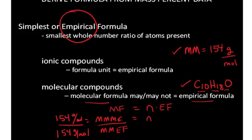So 154 divided by 154 equals 1. In this case, that's telling me that the molecular formula is the same as the empirical formula. So the molecular formula is also C10H18O.